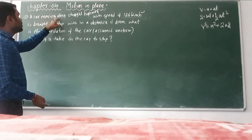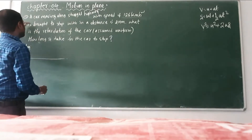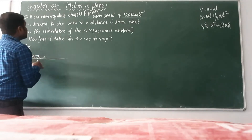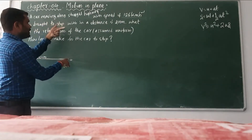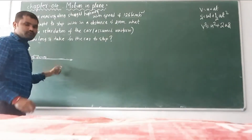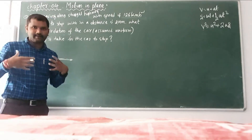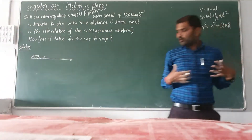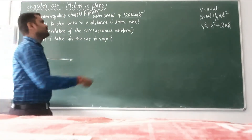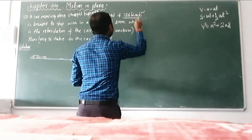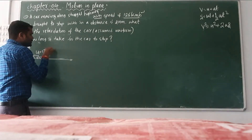What we have: a car moving along a straight highway. A car is moving along, means moving in a straight line. Moving with a speed — that means initial speed. We assume that is the initial velocity. Initial velocity is given, that is equal to 126 km per hour.